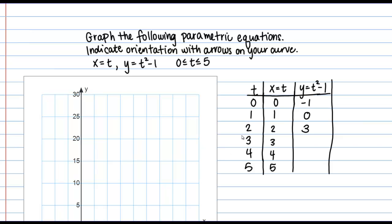If I plug in 3, I get 9 minus 1, which is 8. Plug in 4 gives me 16 minus 1, which is 15. Or plug in 5 gives me 25 minus 1, which is 24.